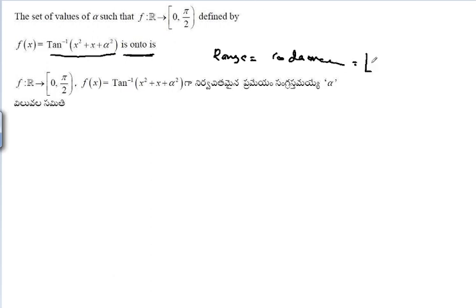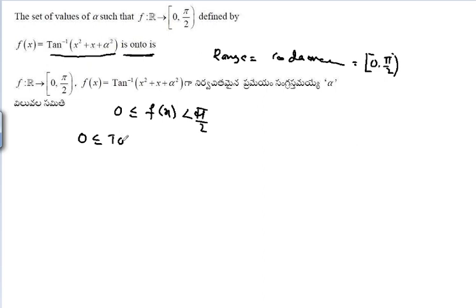Since the codomain is [0, π/2), we need 0 ≤ f(x) < π/2. That is, 0 ≤ tan⁻¹(x² + x + α²) < π/2.